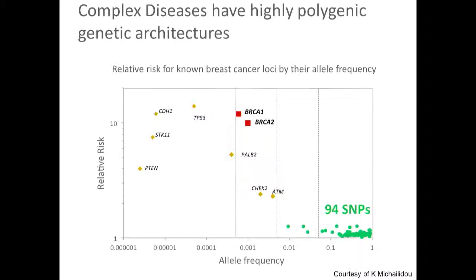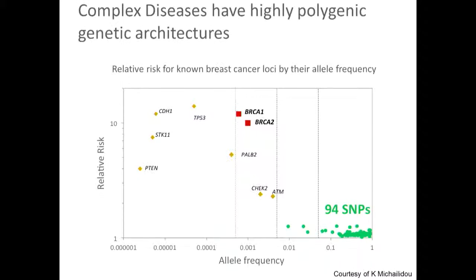In the last 10 years, the focus has been on genome-wide association studies, which try to identify variants that are generally more common in the general population — typically frequency more than 5% or so — and they typically confer much more modest risk. If you have one of these variants, the risk doesn't go by tenfold or fivefold; it might go by maybe 20% or even 10%. But there are many more of them already found, and each individually confers only modest risk, but in combination, they can start imposing a stronger risk.